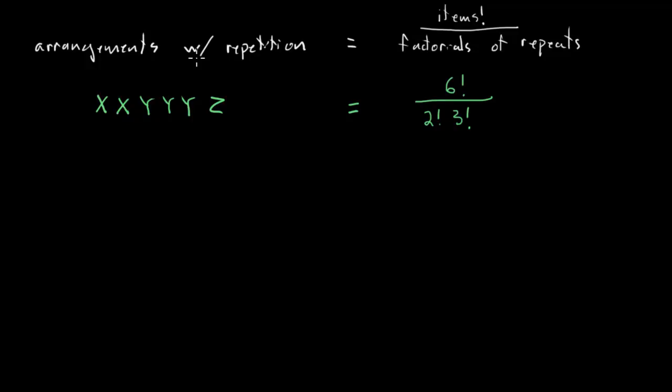So, I guess an intimidating formula at first, but a pretty easy one to put into practice. Here, six items, so six factorial on top. Two X's, so two factorial on the bottom. Three Y's, so three factorial on the bottom. All right, on to the question.